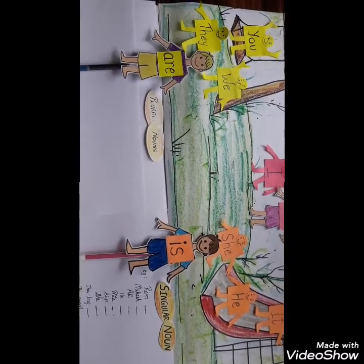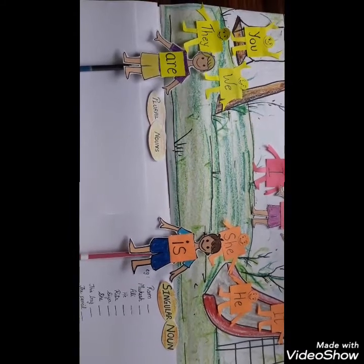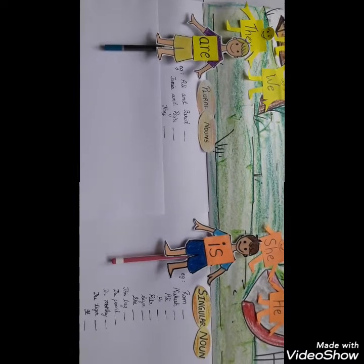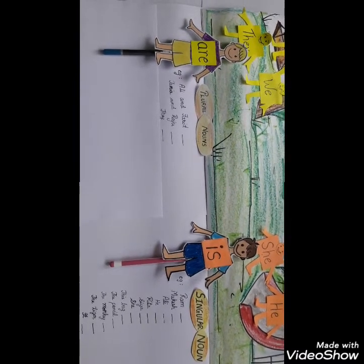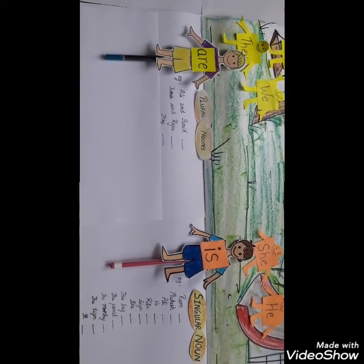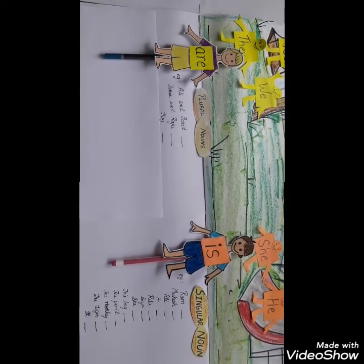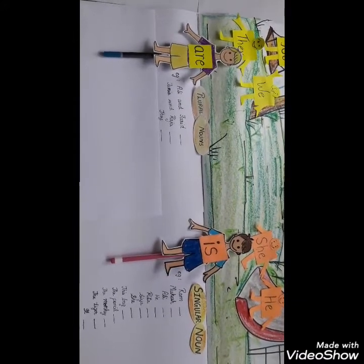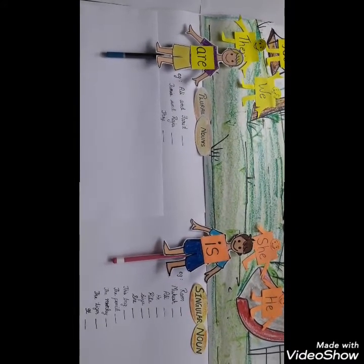Are is used with plural nouns. Examples for plural nouns: Ali and Farid. Ali and Farid are two friends. So we say they, they are. So Ali and Farid are.